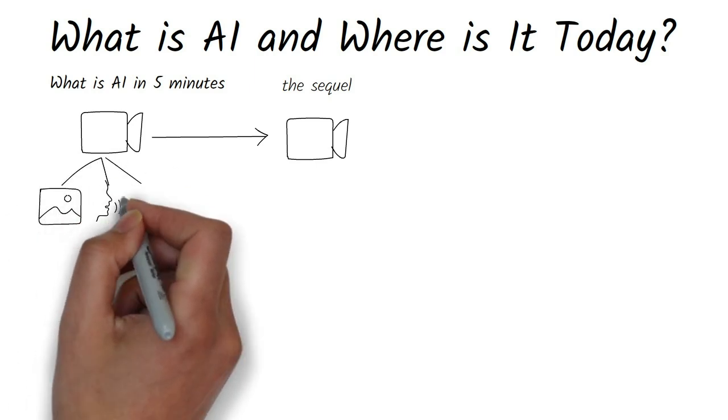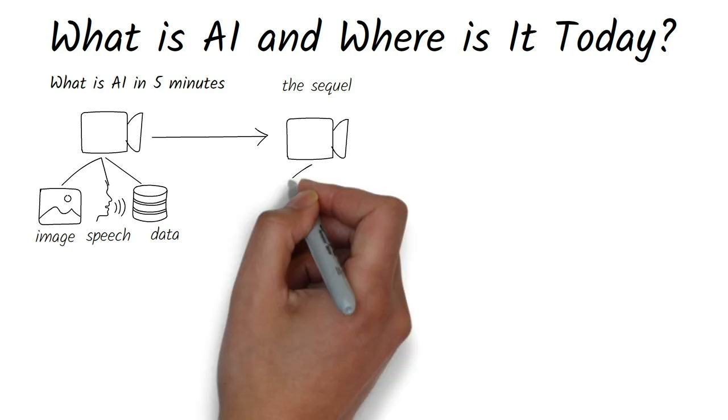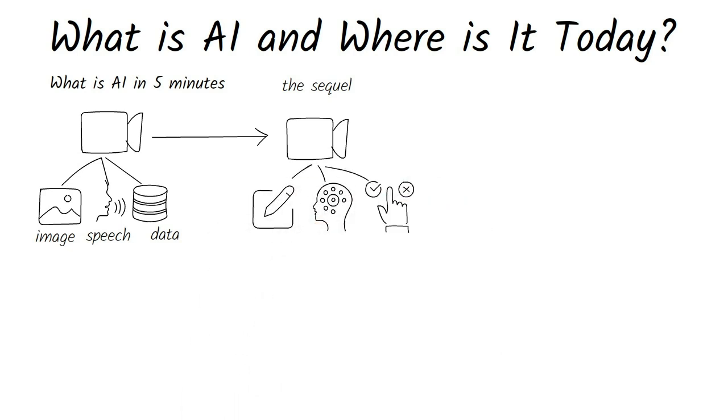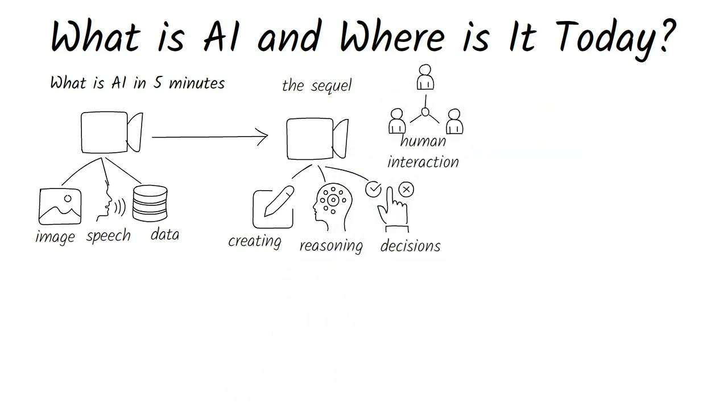When we last talked about AI, it was getting good at recognizing images, understanding speech, and analyzing data. Today, AI is creating, reasoning, making decisions, and even interacting like a human.